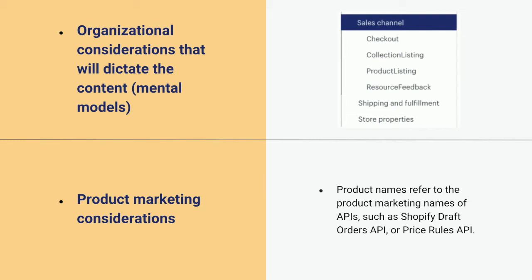For example, at Shopify you can build all kinds of apps that plug into Shopify using our API. But we also have a very specific type of app called a sales channel. If you want to build a sales channel, there's a specific set of APIs you can use to do so. And so it made sense from that business perspective to simply group all of those API endpoints under sales channels, rather than playing hard and fast and ensuring they were always under their parent resources. So be mindful of these kinds of mental models, organizational considerations, and product marketing considerations that will also come to bear in the documentation.